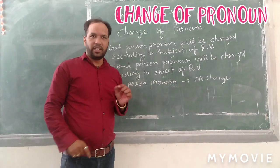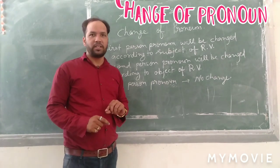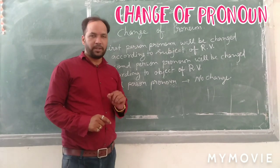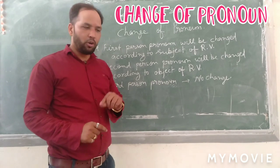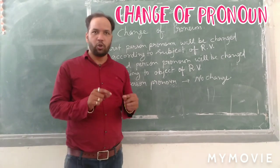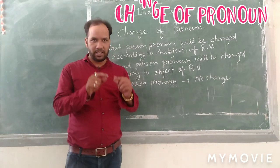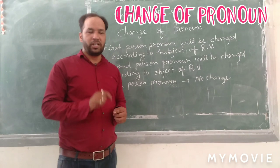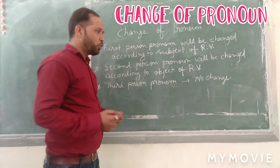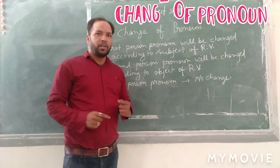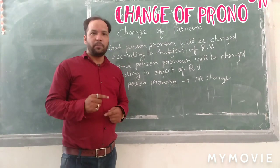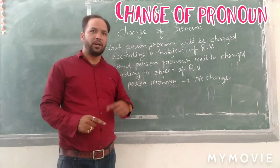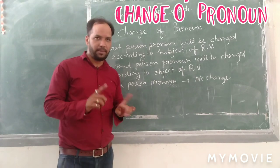If it is outside the inverted comma, it is the reporting verb. The part inside the inverted comma is the reported speech. In short, reporting verb means R.B. and reported speech means R.S.